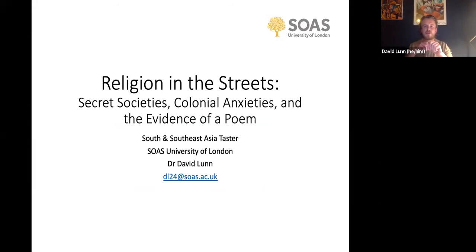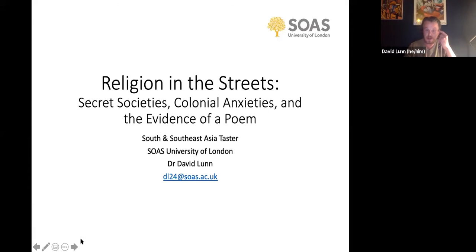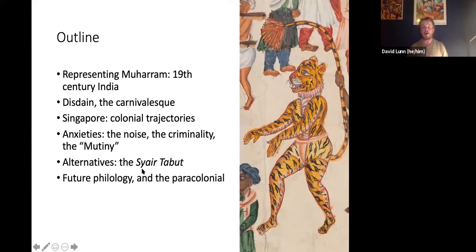So: religion in the streets, secret societies, colonial anxieties, and the evidence of a poem. What we're going to be looking at tonight is particularly focused around representations of Muharram in the 19th century in South Asia and Southeast Asia.